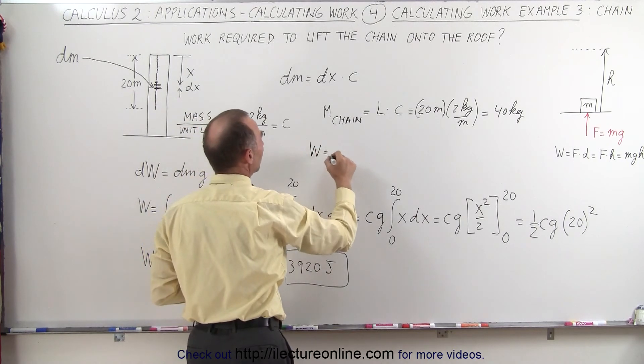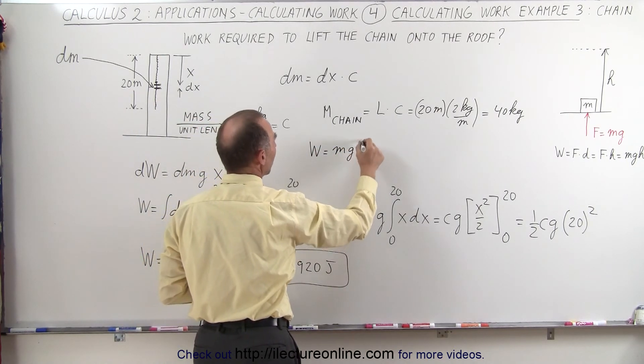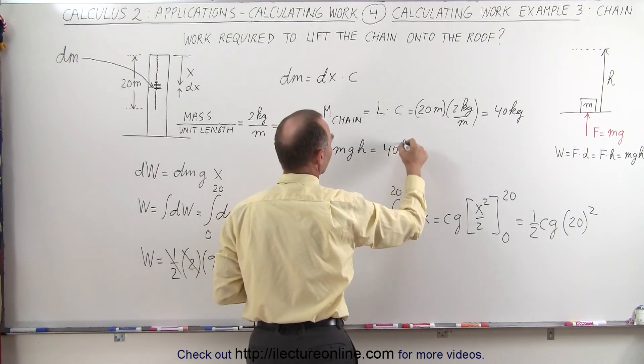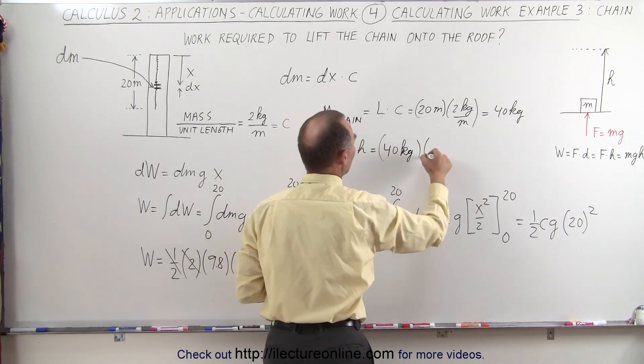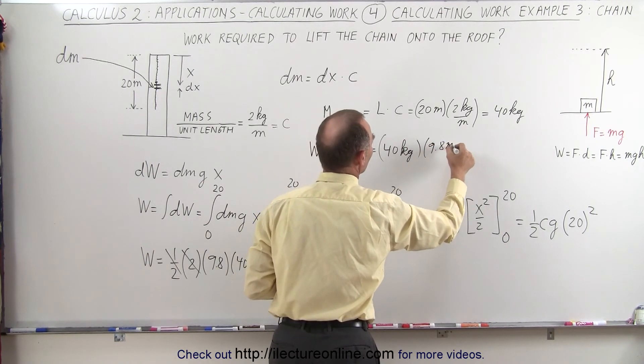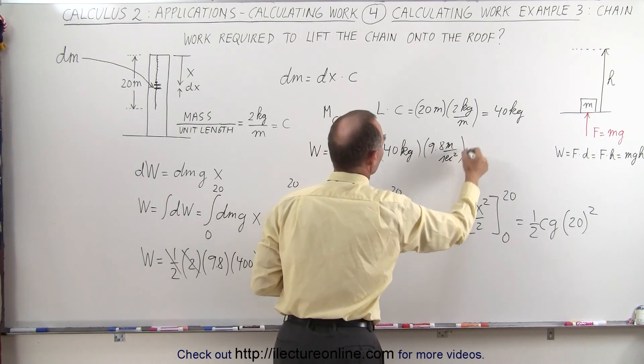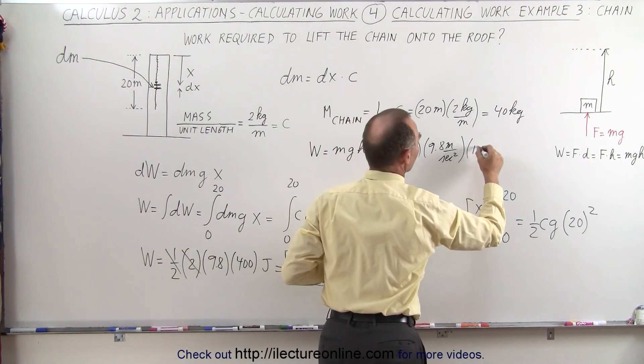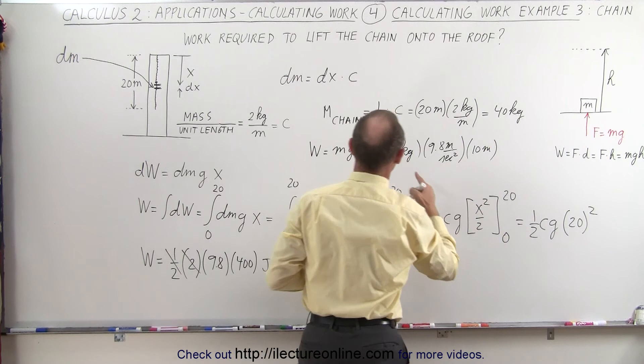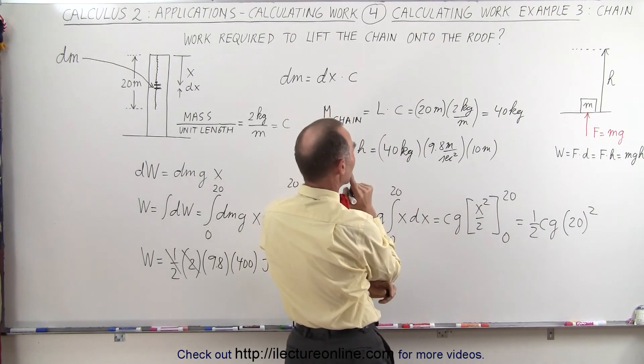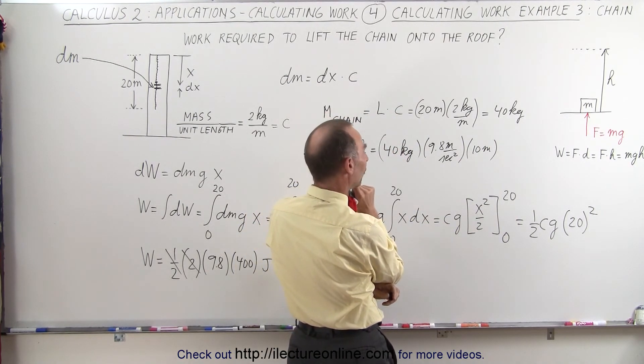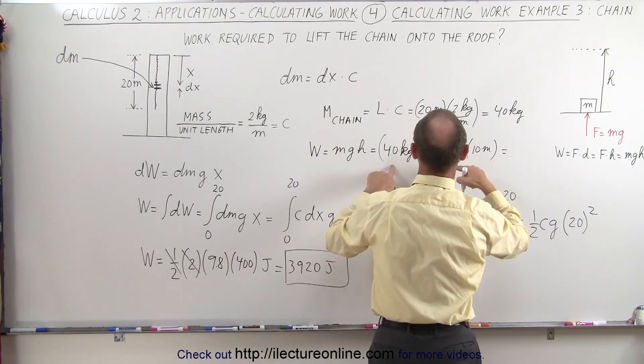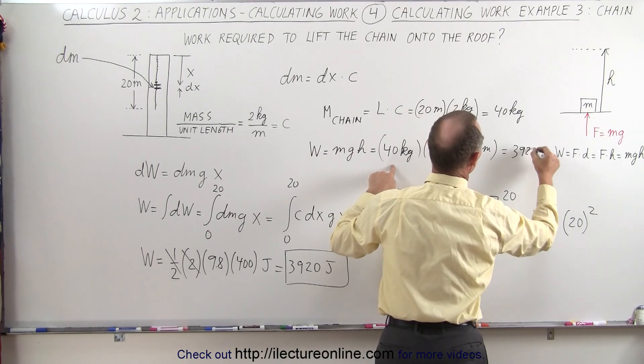Then the work done would be equal to mgh, which in this case would be the total chain mass of 40 kilograms times g, which is 9.8 meters per second squared, times the height. The height from the middle point to the roof would then be 10 meters. Notice we would then get the exact same result. Hopefully. Yes it would be. So that would give us 400 times that, or 3920 joules.